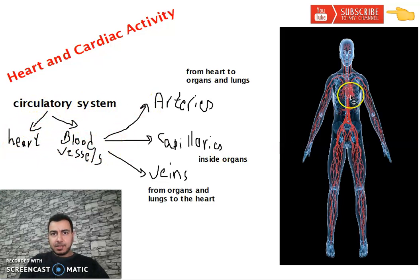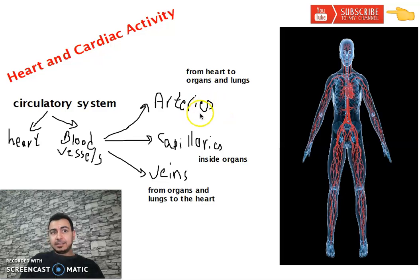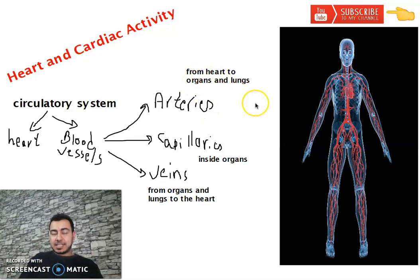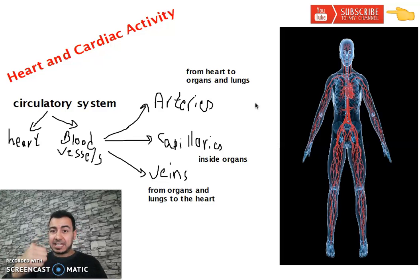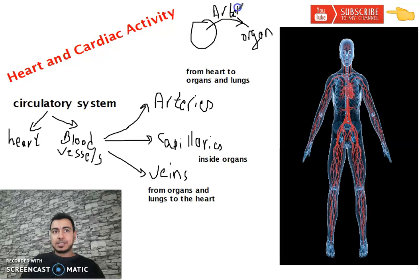The blood vessels in the body are three types. The first type is called Arteries - الشرايين. They are blood vessels that take blood from the heart to organs and lungs. Everything that carries blood from the heart to the organs and lungs is called Arteries. For example, everything going out from the heart to the organs or lungs is an Artery - الشريان, plural Arteries.